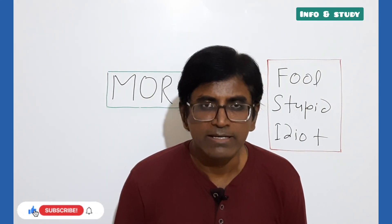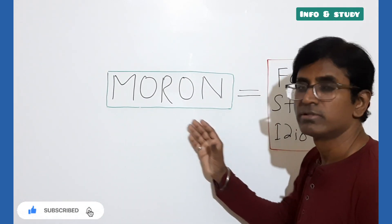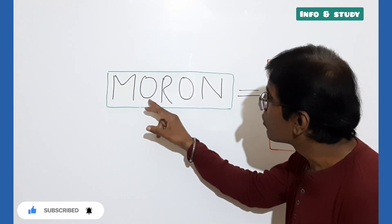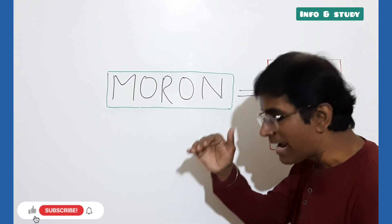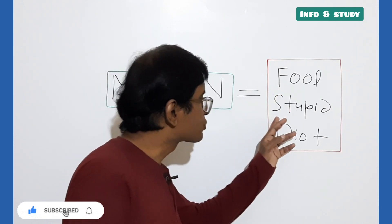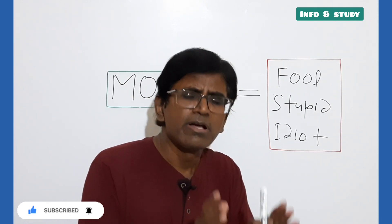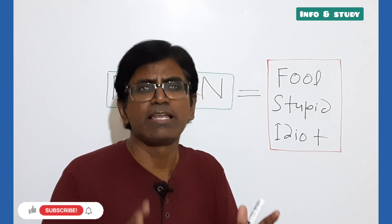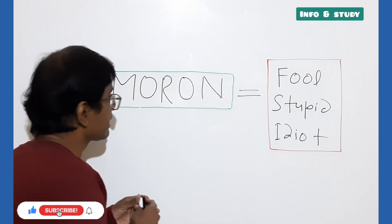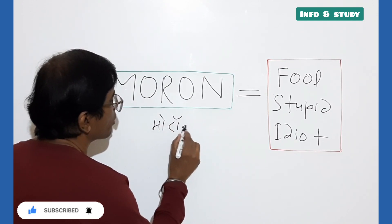Welcome friends, here we have a word: moron, M-O-R-O-N. And what does it mean? It means fool, stupid, idiot. Iska matlab hai bevakuf, murk, mand buddhi. And how to pronunciate it? Iska uccharan kaise karenge? Maine bola bhi hai, aap dekhiye ek bar: moron.